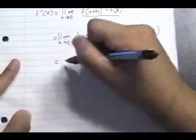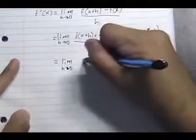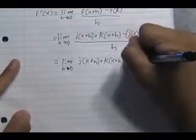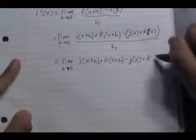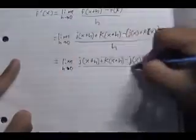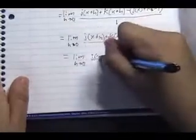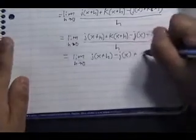We then distribute the minus sign. We can then commute the j and k terms so that they group together and then separate the two fractions.